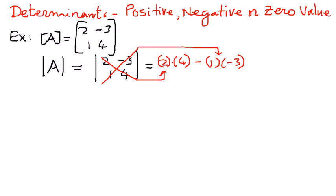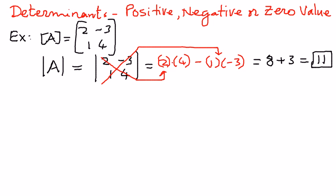So we are subtracting the minor diagonal product from the major diagonal product. 2 times 4 is 8, and then 1 times negative 3 is negative 3, so 8 minus negative 3 is 11. Therefore this value is a positive number — the determinant of a matrix can be a positive value.